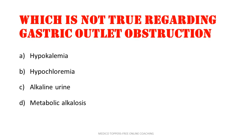Which is not true regarding gastric outlet obstruction: hypokalemia, hypochloremia, alkaline urine, or metabolic alkalosis? The answer is alkaline urine.